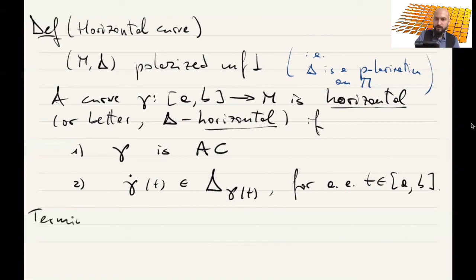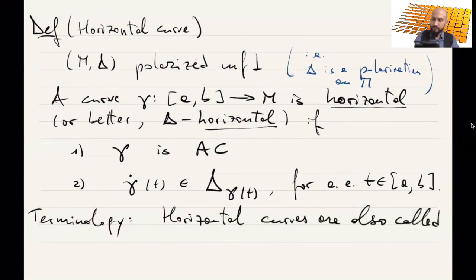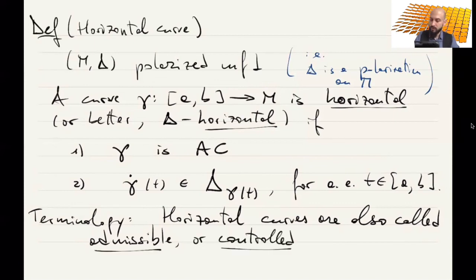And the second condition is that this derivative belongs to the sub-bundle delta at the point gamma(t). This is true for almost every t in [a,b]. Other terminology for horizontal curves: horizontal curves are also called admissible or controlled curves, or Legendrian. I will try to mostly use the name horizontal or admissible.